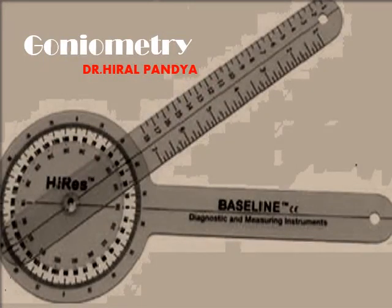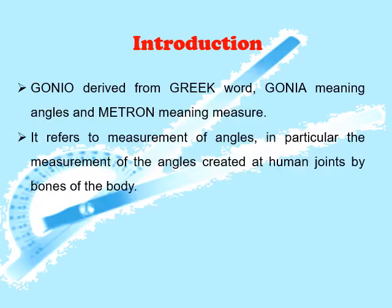Goniometry. The word goniometry is derived from the Greek word gonia meaning angles and metron meaning measure. It refers to measurement of the angles created at the human joints by the bones of the body.